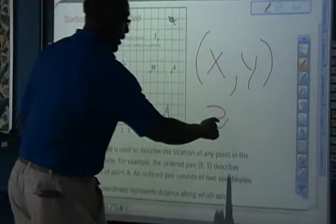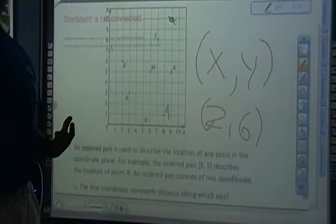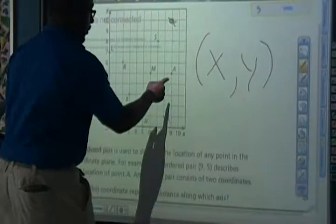And then my y-axis is going up, so I'm going to go up 1, 2, 3, 4, 5, 6. So the ordered pair for R would be 2, 6.